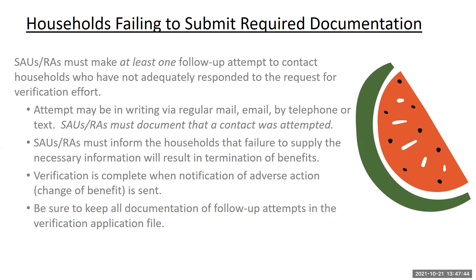When households fail to submit the required documentation, you must make at least one follow-up attempt for non-response, which can be made by regular mail, email, telephone, or text. Be sure to document all attempts and results. Households must still be informed that their eligibility status will be changed if there is no response. Verification is complete when notification of adverse action is sent. If they don't respond, they'll be moved to paid status, and you should remind households that this will roll over for the first 30 days of next year.